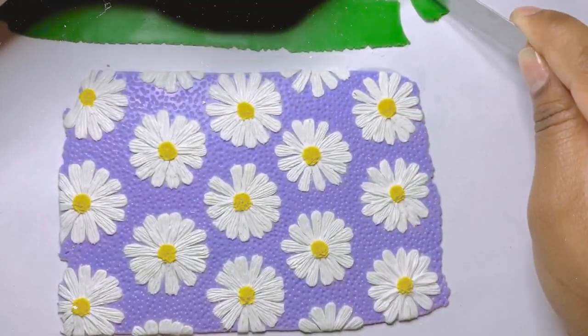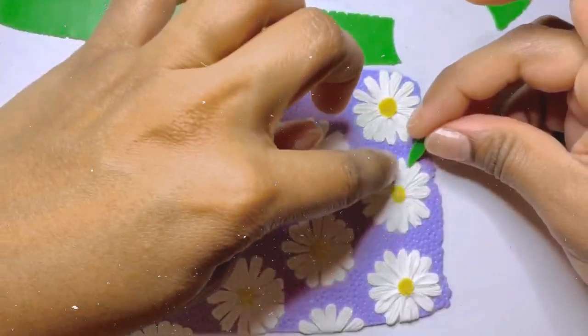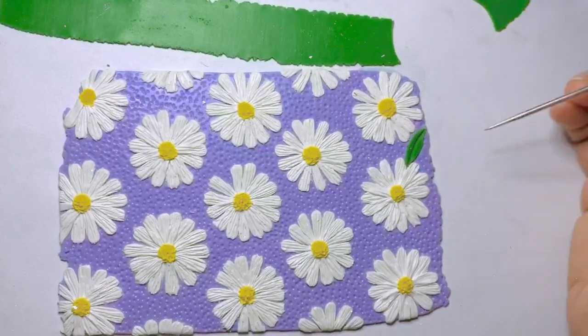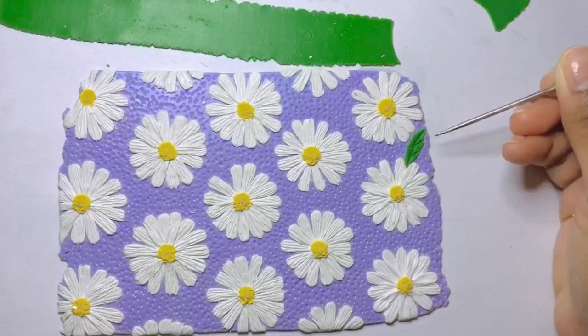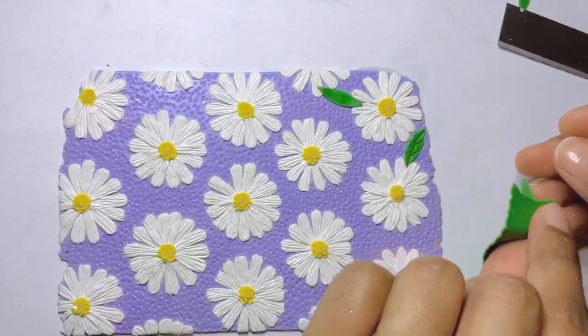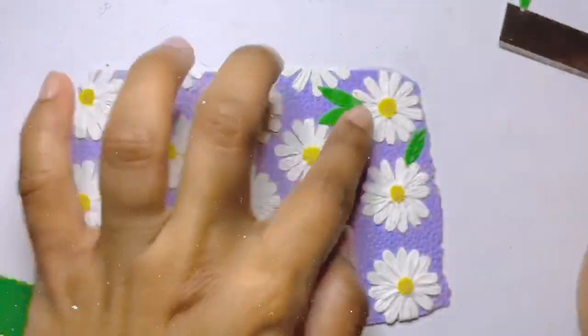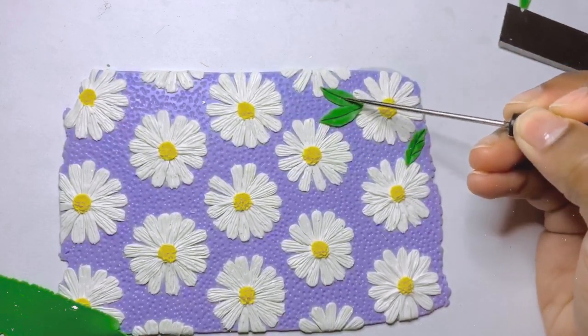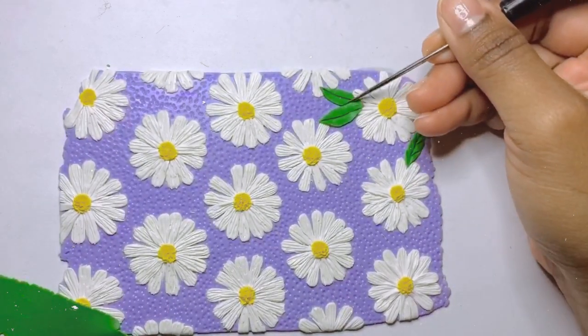Using a green sheet of clay that I ran through my pasta machine using the thinner setting, I cut out some leaves and used my needle tool to add some veins. And I randomly placed these leaves along the flowers.